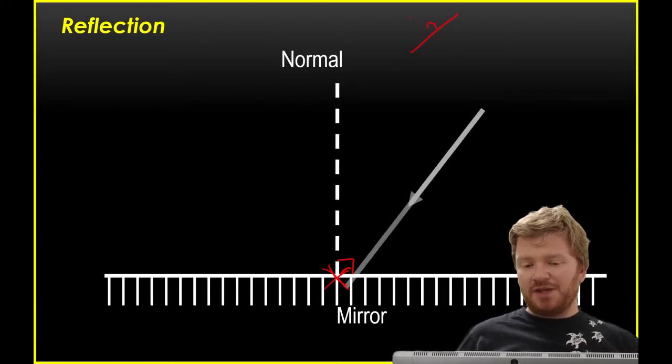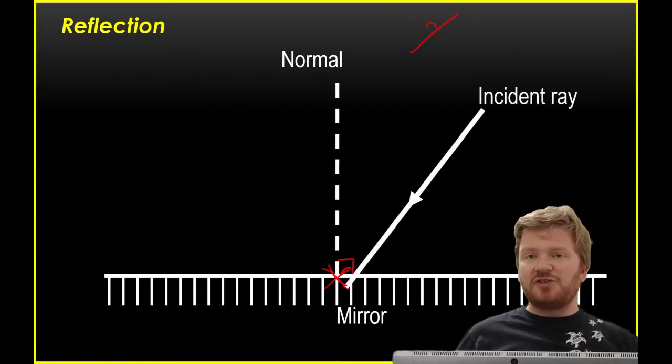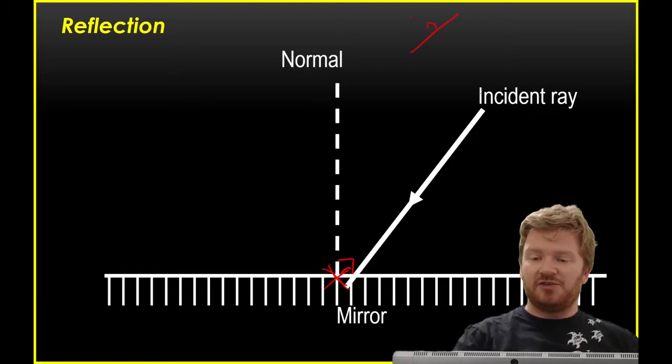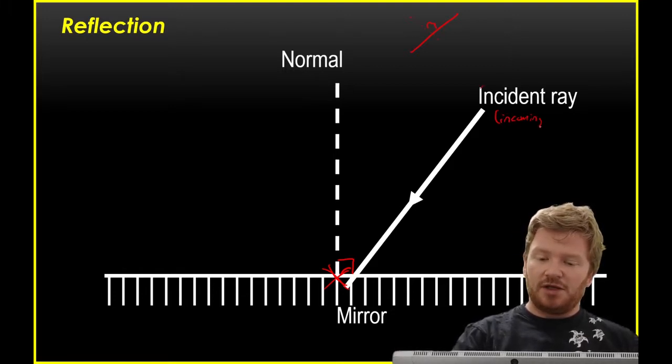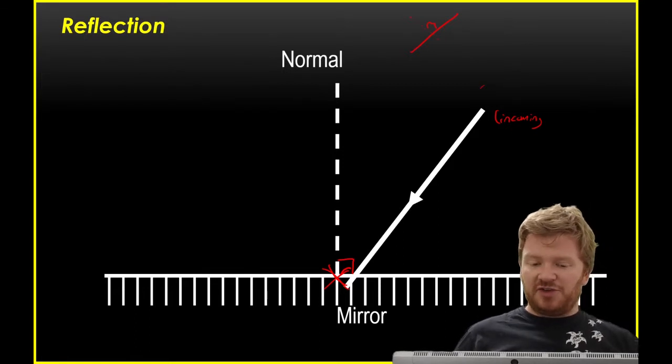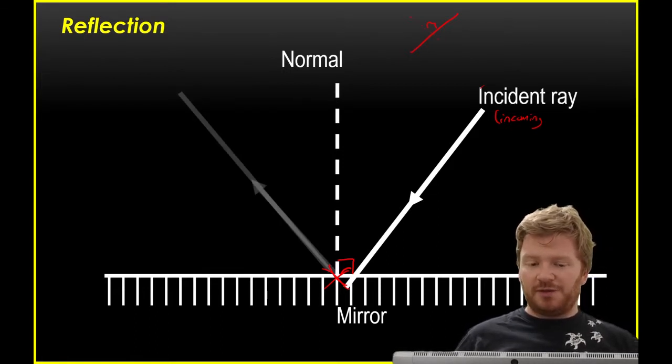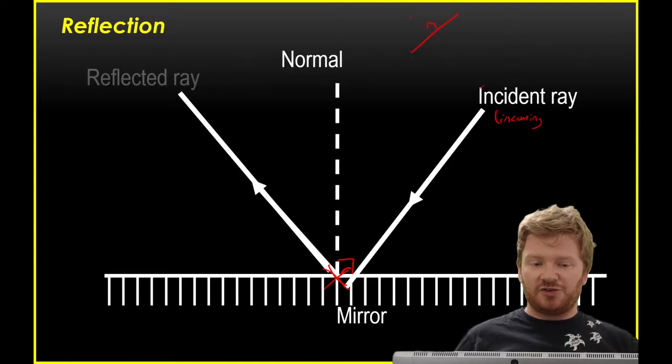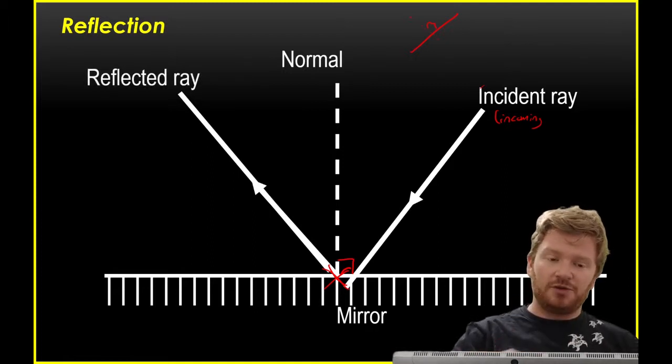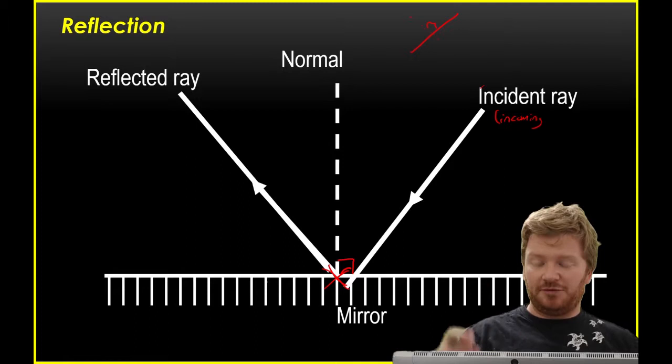And so I'm going to have a ray that comes in, and I call that the incident ray. Incident means incoming. And after it's hit the mirror, you should be familiar with the idea that we get reflection. So there's another ray that comes off from the normal, and that's called the reflected ray, the ray that leaves.